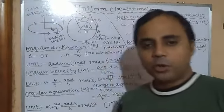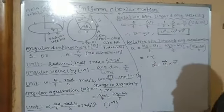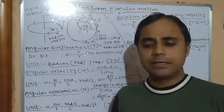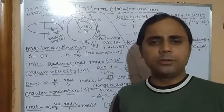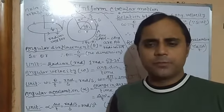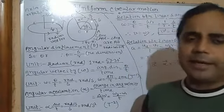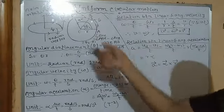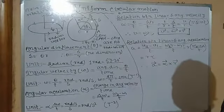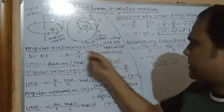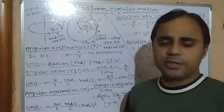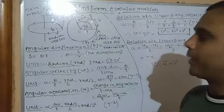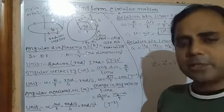Good morning dear students. Today we will start the chapter Uniform Circular Motion, which we have already read in class 10. In class 10 you learnt about some elementary ideas. Since in the case of circular motion, the speed — that is, the magnitude of the velocity — is constant, that is why it is called uniform. So here uniform means speed is constant.